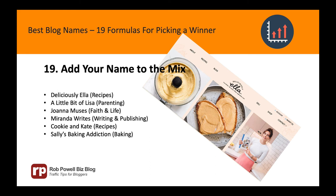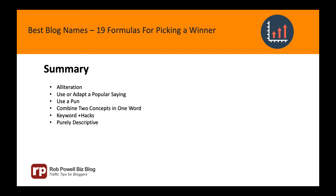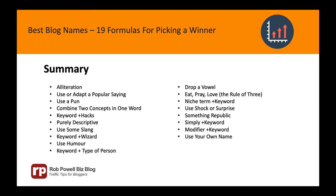To sum up, here's a quick recap of the 19 formulas for choosing a winning name for your blog: use alliteration; use or adapt a popular saying; use a pun; combine two concepts in one word; keyword plus hacks; purely descriptive; use some slang; keyword plus wizard; use humor; keyword plus type of person; drop a vowel; the rule of three; a niche term plus your keyword; use shock or surprise; something republic; the word simply followed by your keyword; a modifier word followed by your keyword; using your own name; and adding your name to the mix. I hope this helps you find a fantastic name for your blog. Don't forget to subscribe to my channel and I look forward to seeing you in the next video.